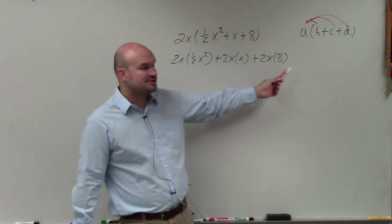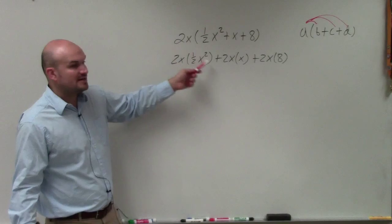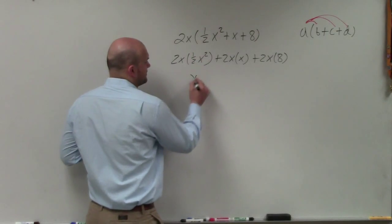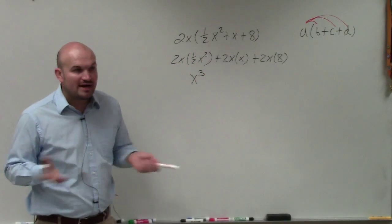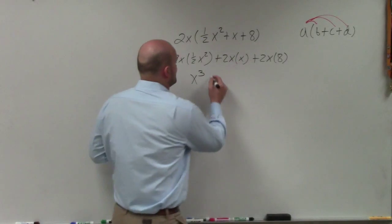Now, you just multiply each of these three terms. So 2 times 1 half is just 1. x times x squared is x cubed. There's a 1 in front of there, so it's really 2 times 1 is just 2. x times x is x squared.